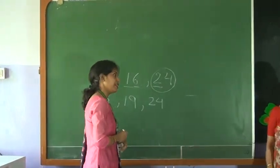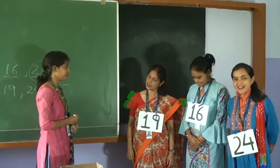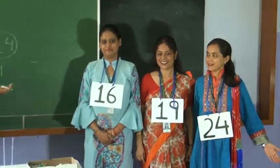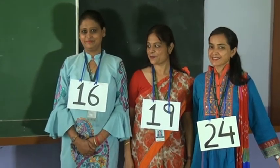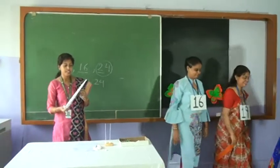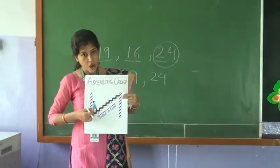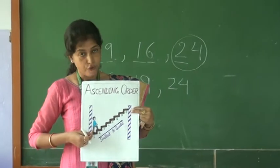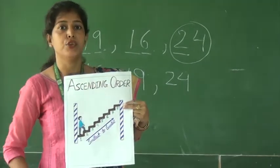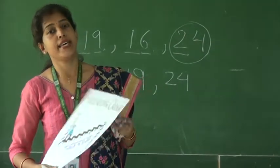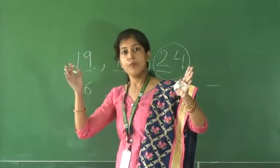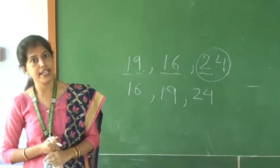Now the numbers have understood who is smaller and can arrange themselves. See children, now the numbers have arranged themselves in ascending order. In this chart also, the boy is moving upward from the smallest number and slowly moving to the biggest number. So in ascending order, in the same way, we arrange the numbers from smallest to biggest. Now you all have understood ascending order.